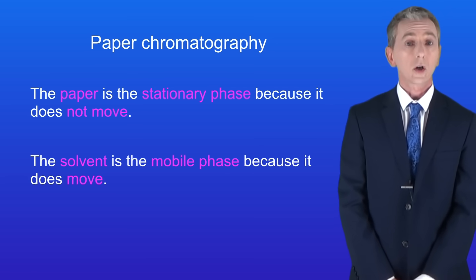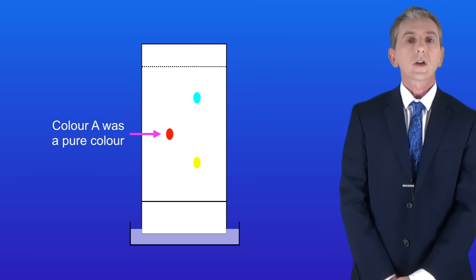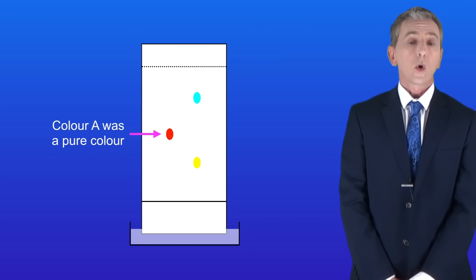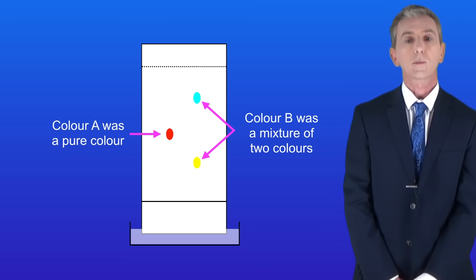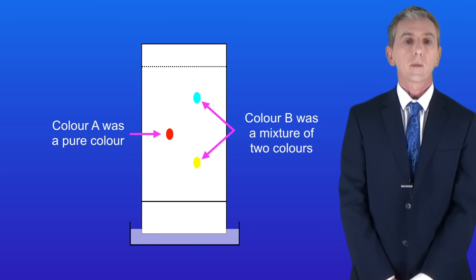So after a while the paper could look like this. As you can see the red color forms a single spot here. Because there's only one spot we know that red is a single pure color. However you can see that color B has now separated into two different spots and that tells us that color B was actually a mixture of two different colors.